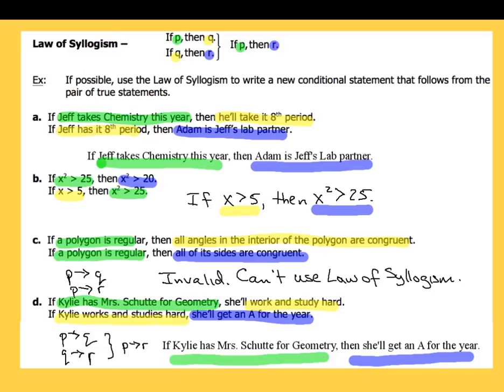All right, boys and girls, that is going to be it for the laws of deductive reasoning. There are only two of them: the law of detachment and the law of syllogism. We'll go ahead and apply these and work on them in class. I know some of you are working on your commercials, so we'll look forward to seeing you in class soon. Have a great day and I will see you again very soon.